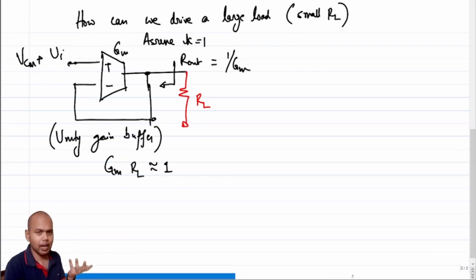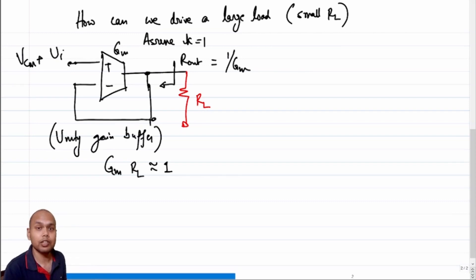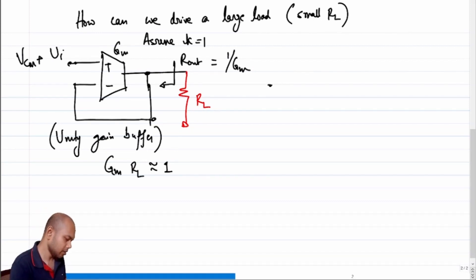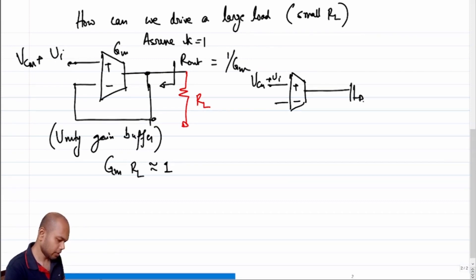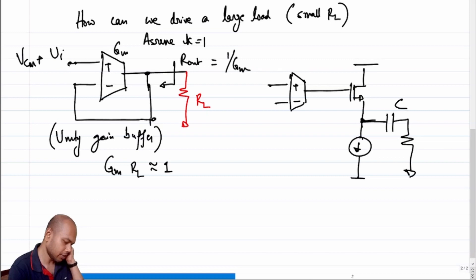What is the solution? We might as well think of putting a voltage buffer between this gm and RL — that might help us. What is the simplest voltage buffer we know of? A common drain amplifier — it is a voltage-controlled voltage source with unity gain. So let us do that: let us put a common drain amplifier. We can drive RL through a capacitor of value C_infinity and all.